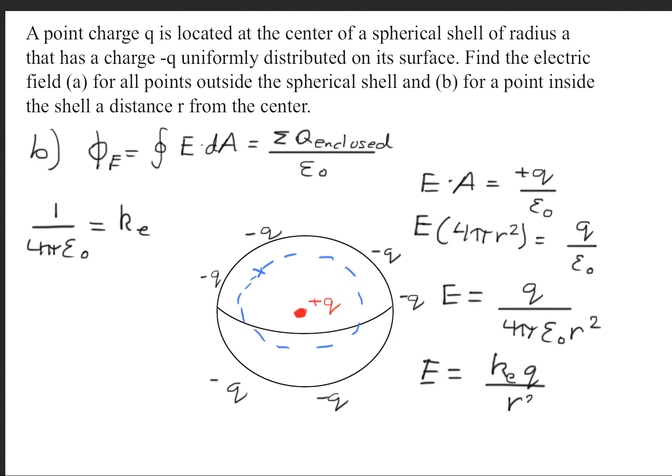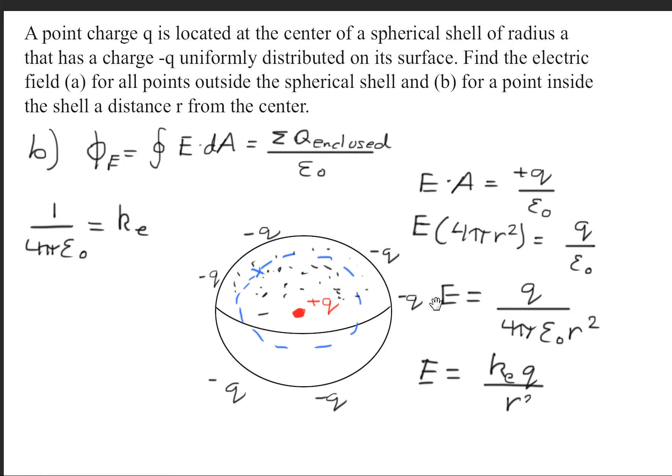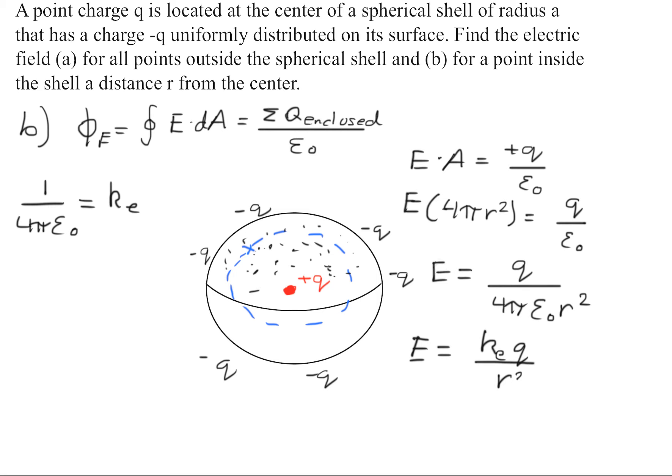So if they had given us the value of the point charge, we could get a numerical value, but that is the electric field all within the sphere. Now the electric field will also be pointing outwards. It points outwards because we have a positive Q value.